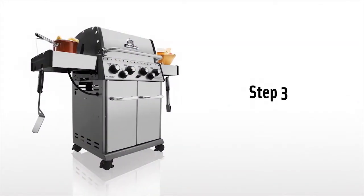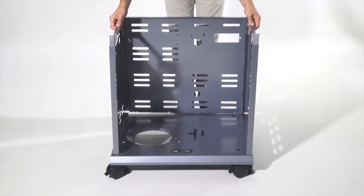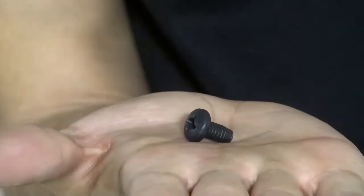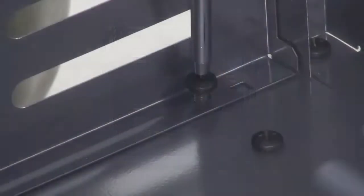Step 3. Lift the cabinet assembly onto the assembled base. Using the same screws as step 1, secure the cabinet side panels to the base and caster brackets.